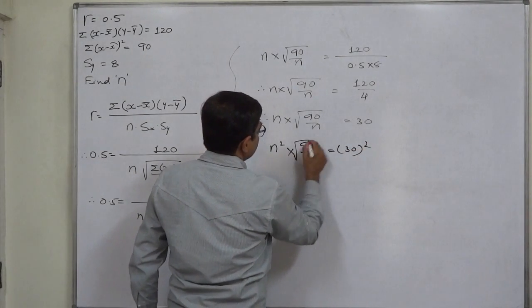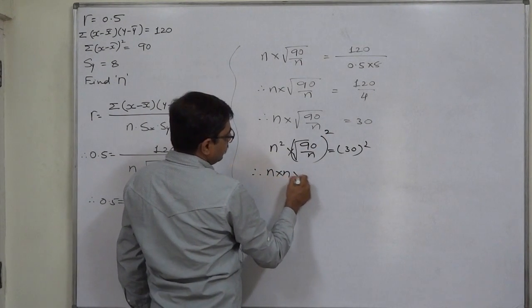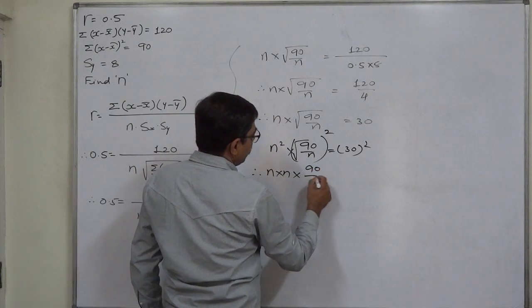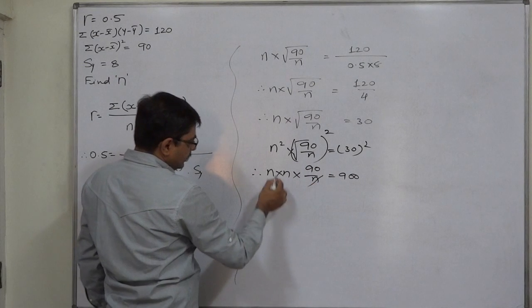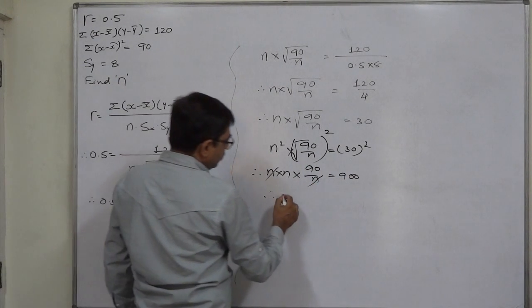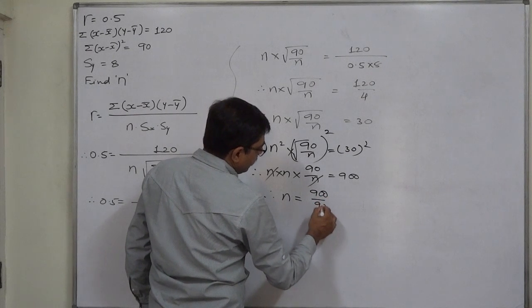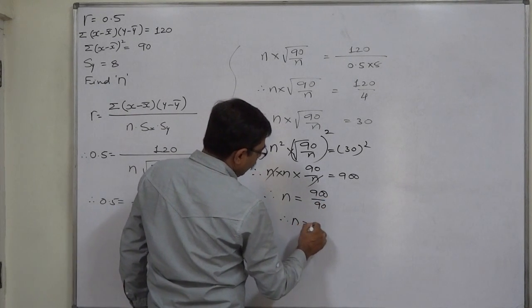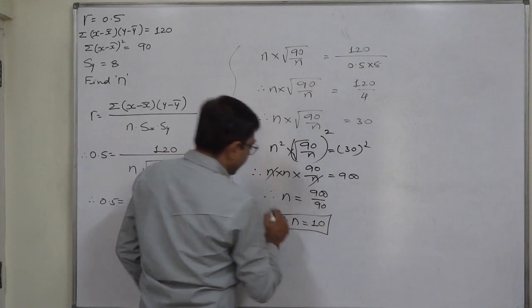After cancellation of one n, ultimately n equals 900 divided by 90. So n, or the number of observations or sample size, comes to 10.